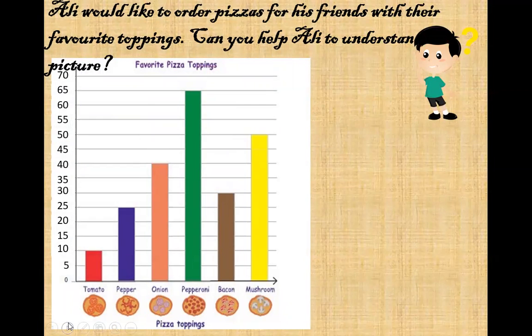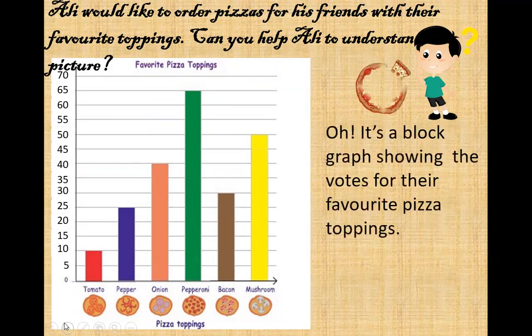Here, Ali would like to order pizzas for his friends with their favorite toppings. Can you help Ali to understand the picture? Here you can see the pizza toppings: tomato, pepper, onion, pepperoni, bacon and mushroom. It's a block graph showing the votes for their favorite pizza toppings. We'll help Ali to understand this picture.